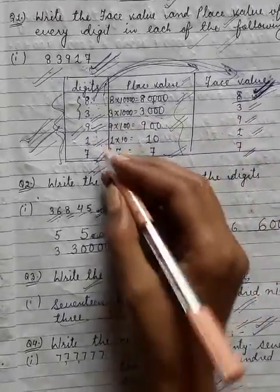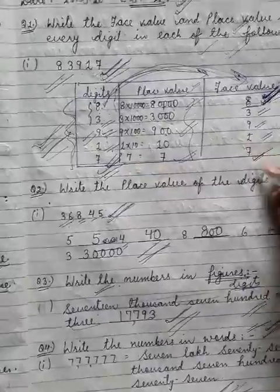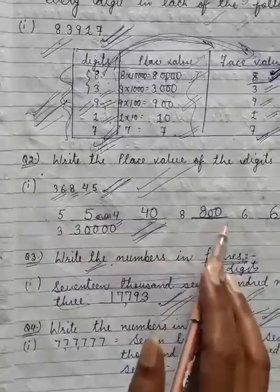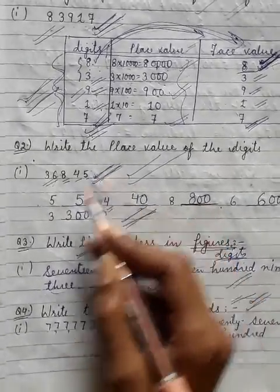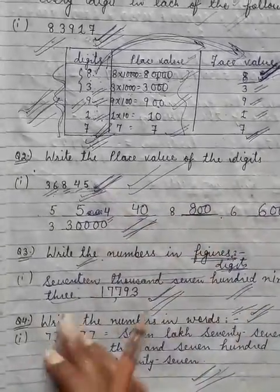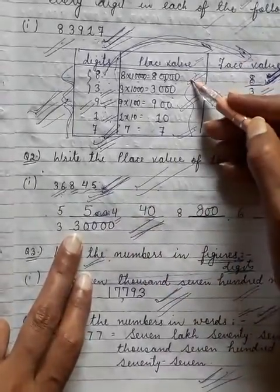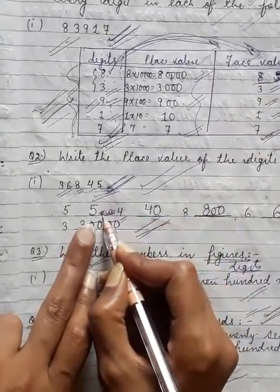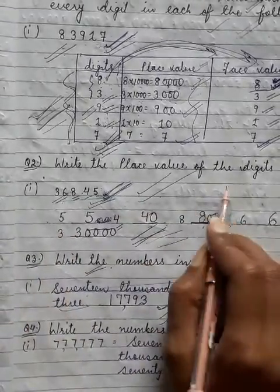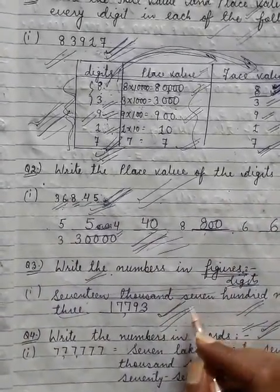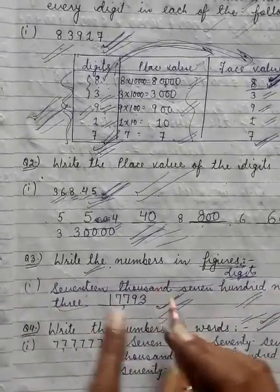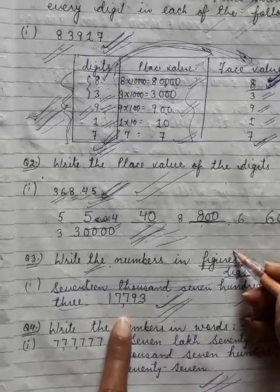So now students, you have learned about place value and face value. You can now write the place value of any digit from the given number — digit ko uske place ke saath multiply karke place value milega. When you move to the next question, write the numbers in figures — yahan pe number name likha gaya hai, aapko isko figures ke form mein likhna hai, aur figure matlab digit hota hai.